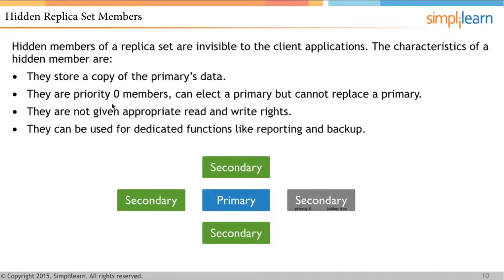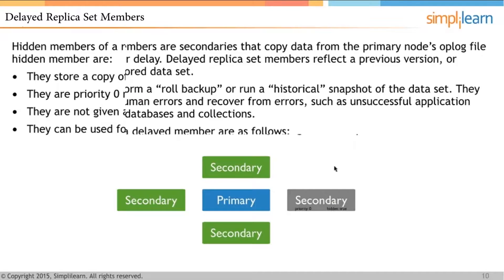Hidden replica set members are not visible to client applications. Their characteristics: they store a copy of the primary's data, they are priority 0 members meaning they are always secondary and can never become a primary, they can elect a primary but cannot become one, they are not given appropriate read and write rights, and they can be used for dedicated functions like reporting and backup.